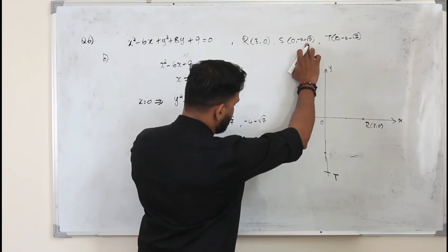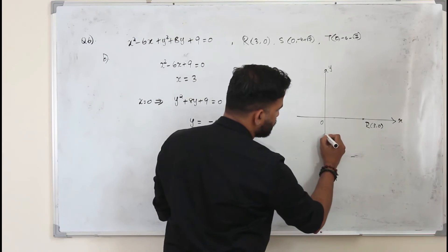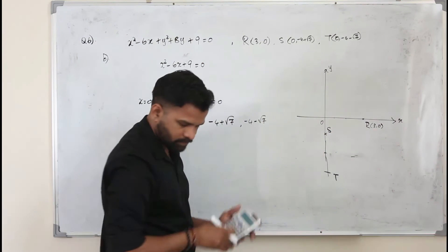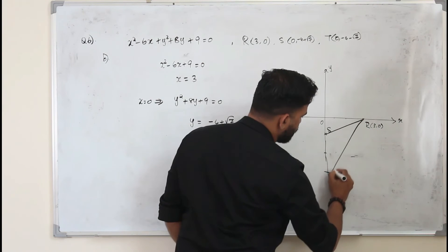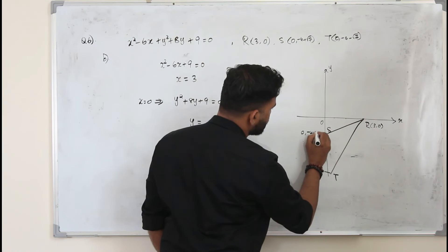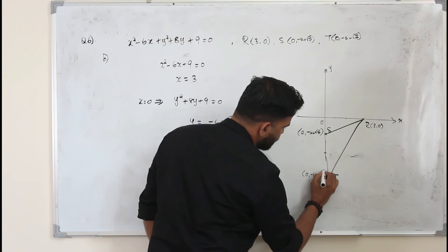This value minus 4 plus root 7 is approximately minus 1 point something. So maybe here, this will be s. So we need to find the area of this triangle. This point is 0 comma minus 4 plus root 7. This is 0 comma minus 4 minus root 7.